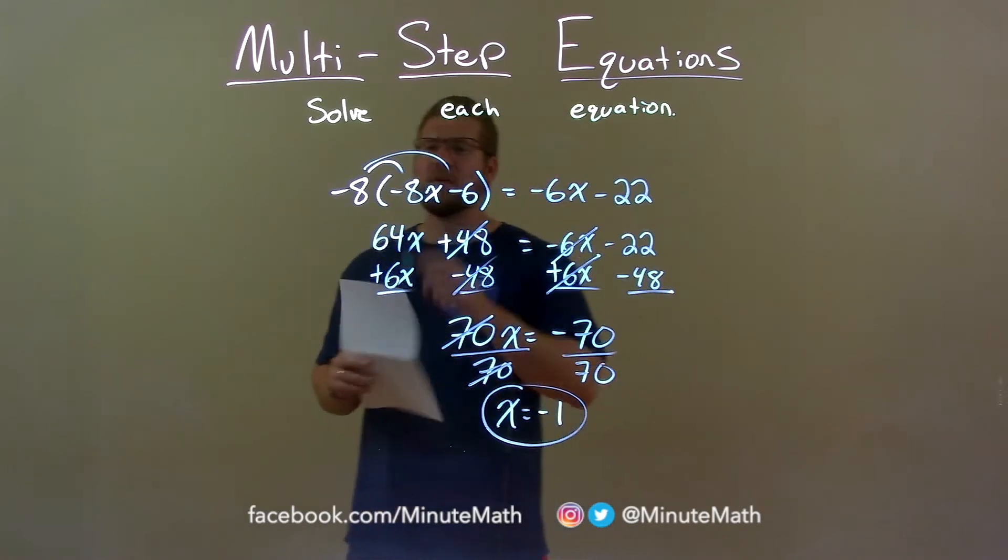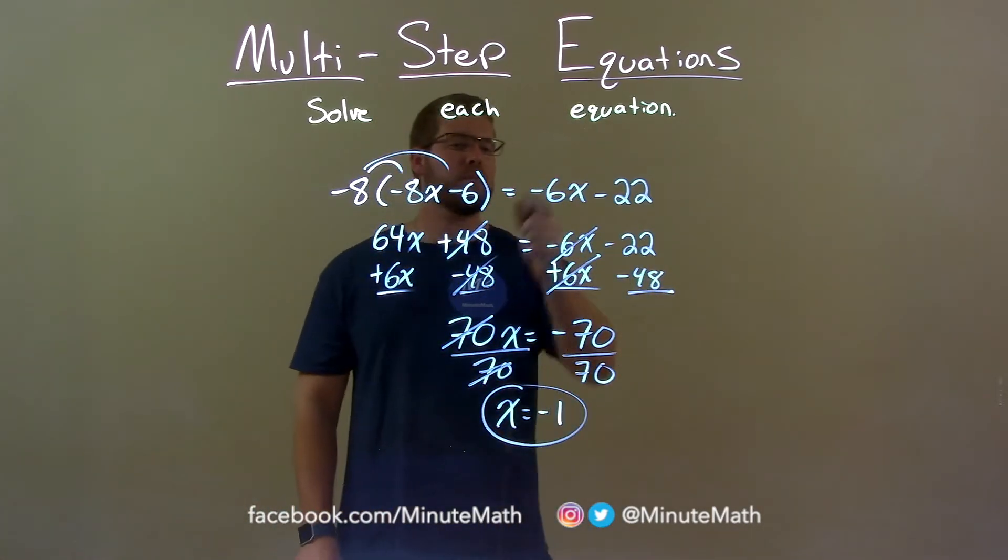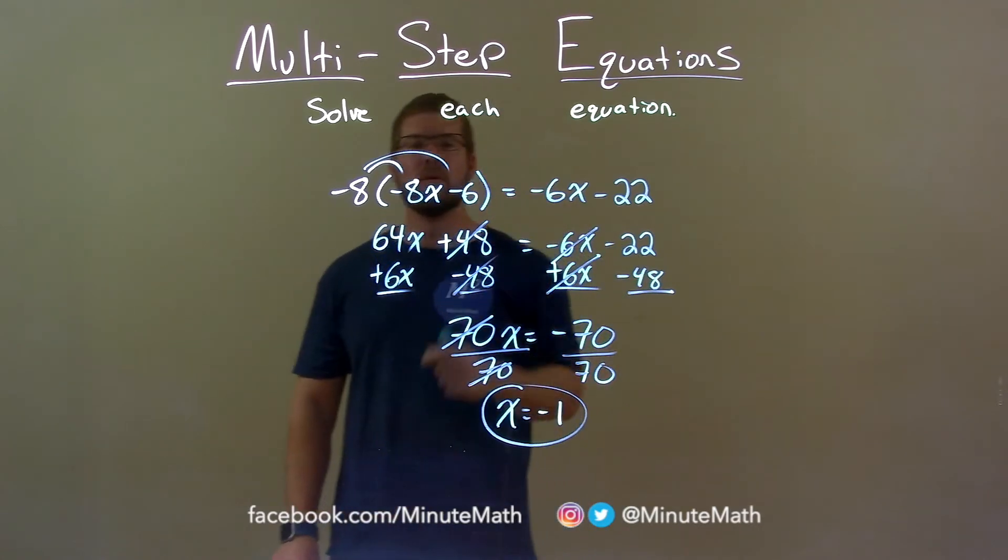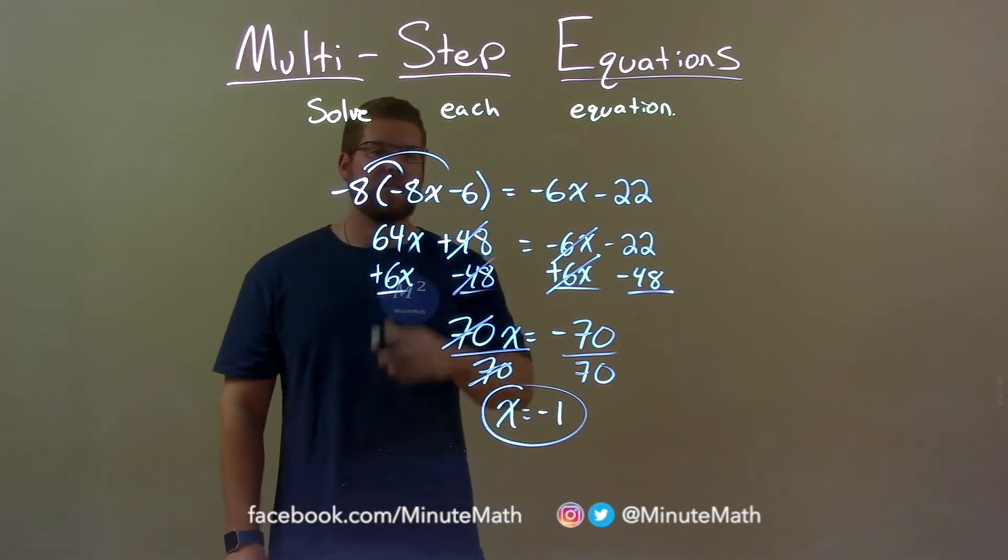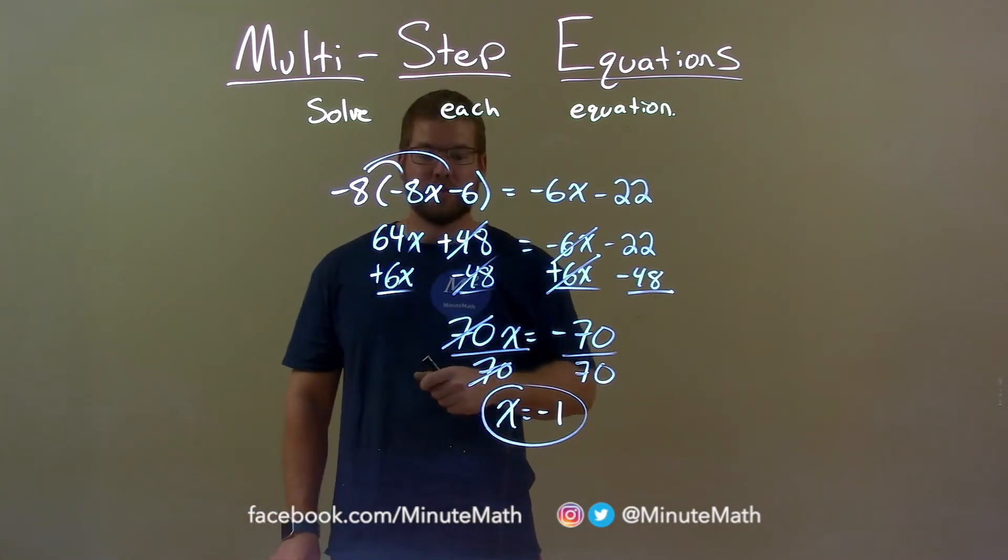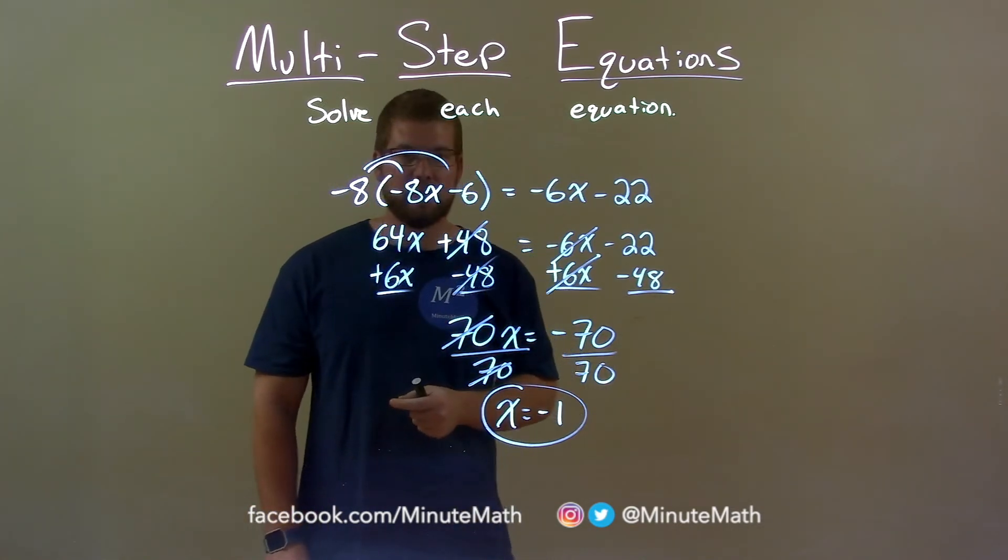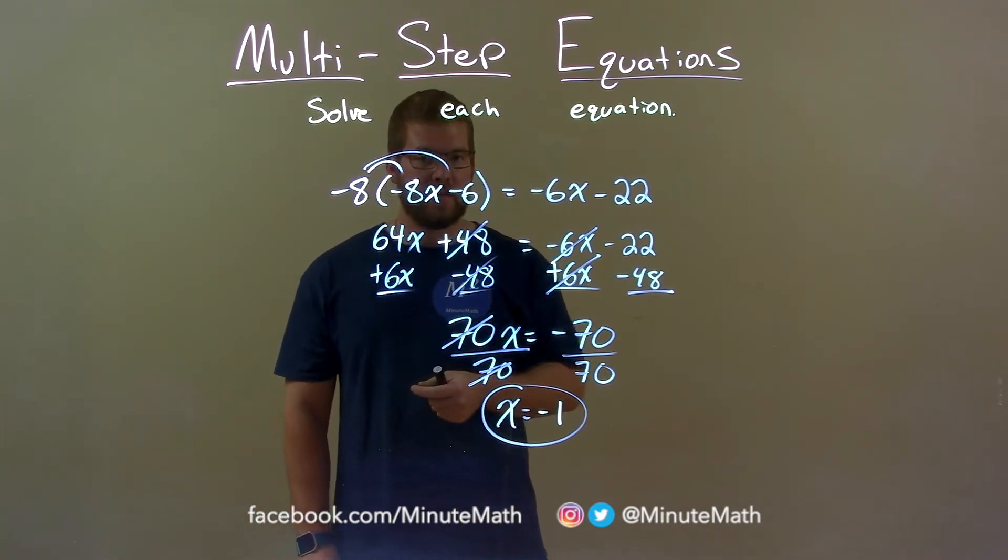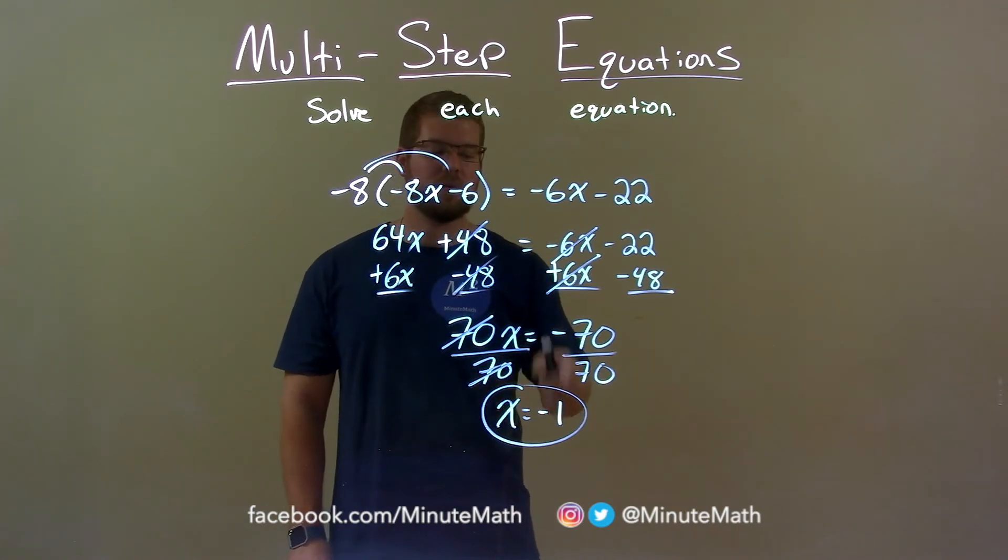Quick recap, we're given negative 8 times negative 8x minus 6 equals negative 6x minus 22, and we want to solve for x. Distribute negative 8 to both parts of the parentheses, then I combine my like terms. 70x now equals negative 70, divided both sides by 70, gives me x by itself equal to negative 1.